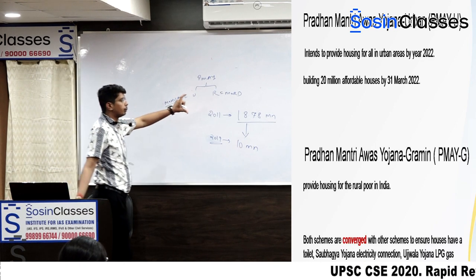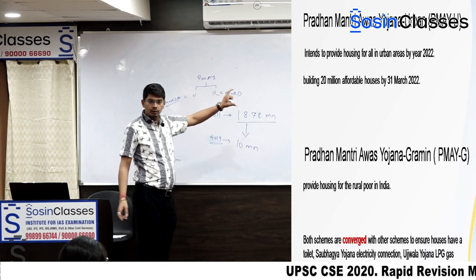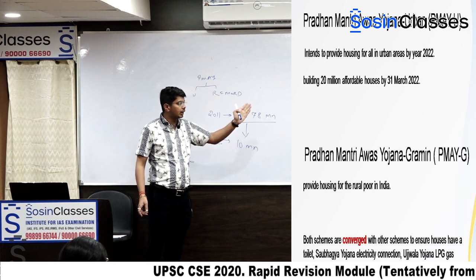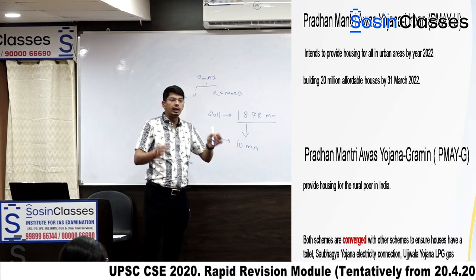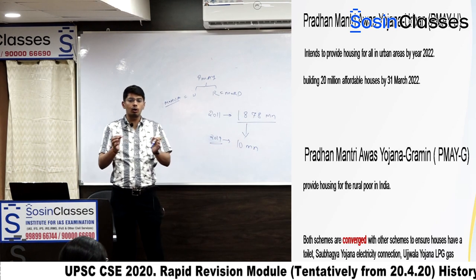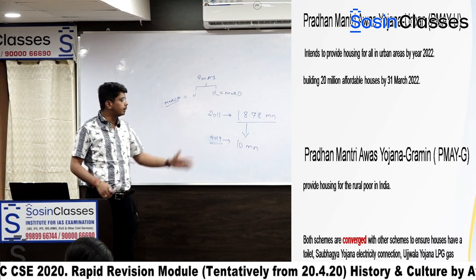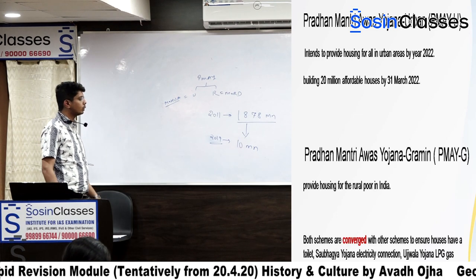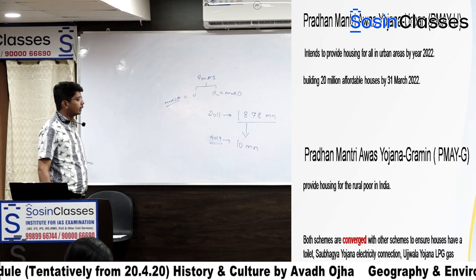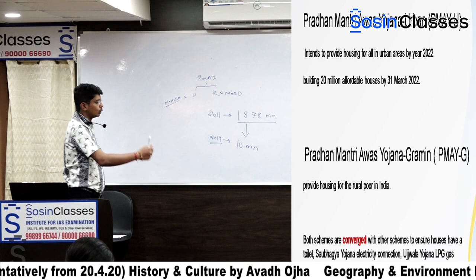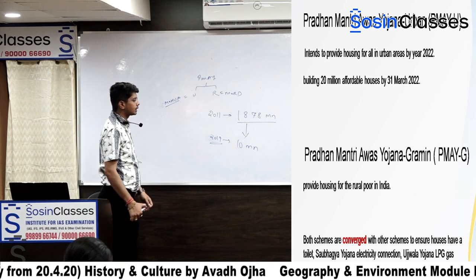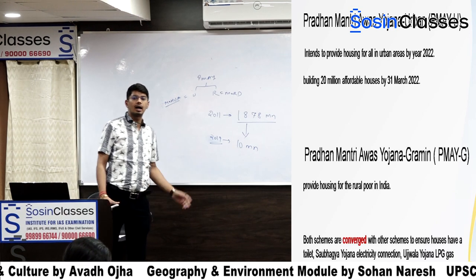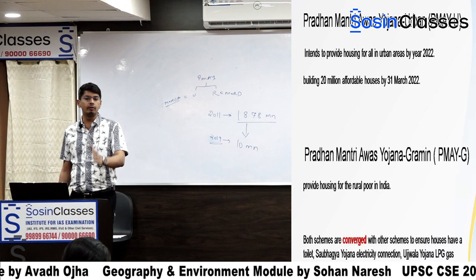You are providing only houses through the Awas Yojana. But this scheme is converged with other schemes. Merely providing houses is not enough. That is why schemes like electricity — Saubhagya Yojana, Swachh Bharat Abhiyan, Ujala Yojana — LPG gas connection, access to drinking water, and Jan Dhan banking facilities are converged with this scheme.